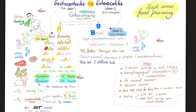Enterotoxin A causes regular food poisoning, which means watery diarrhea caused by eating potato salad, ham, salted pork, banana pudding, custard, pastries, ice cream, and others. When these foods are contaminated with enterotoxin A, you will have the symptoms of Staph gastroenteritis, which resolve on their own within 24 hours.